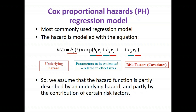A positive sign for any regression coefficient B1 to BK in the model means that the hazard — the risk of the event at that time point — is higher for subjects with higher values of that variable.